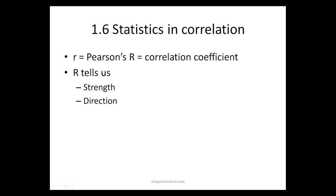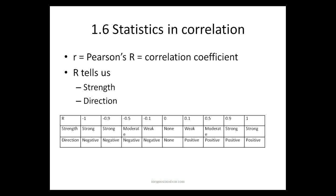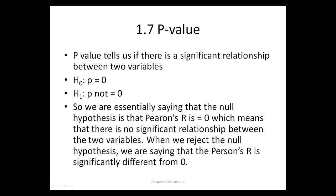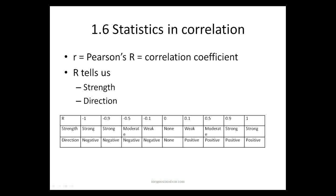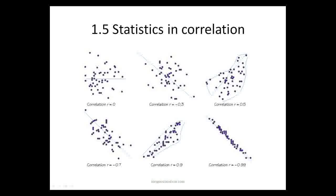r is also known as Pearson's r and is also known as the correlation coefficient. As I said, it tells us strength and direction. There is a quick table to talk about strength between the two variables and also the direction between the two variables. A p-value will tell us whether there is a significant relationship between the two variables. Remember that a p-value is always testing a null hypothesis. So if we go back a slide,